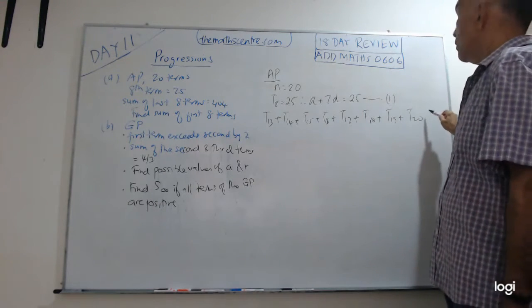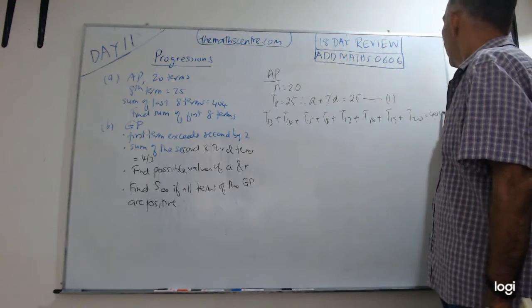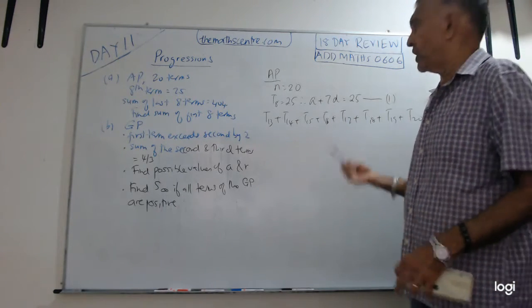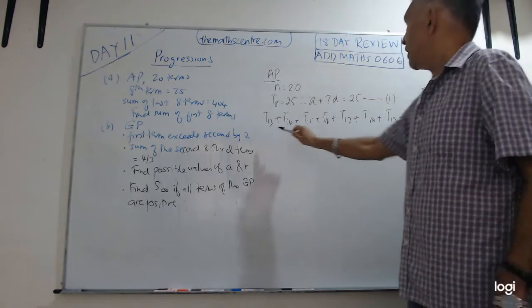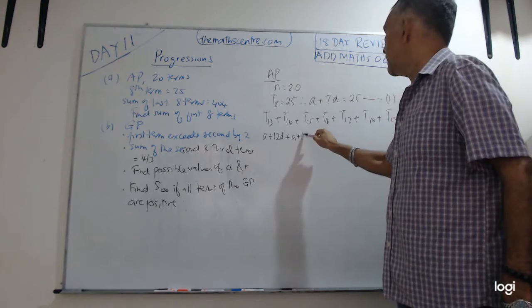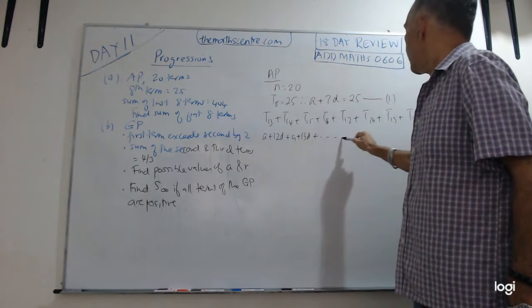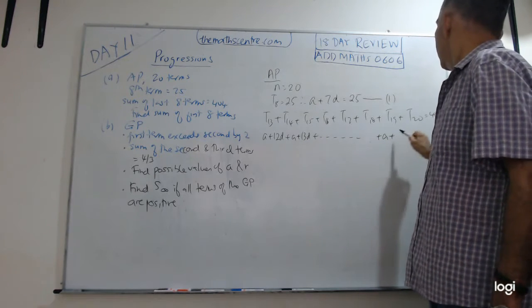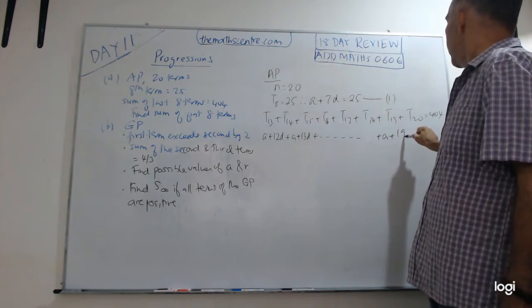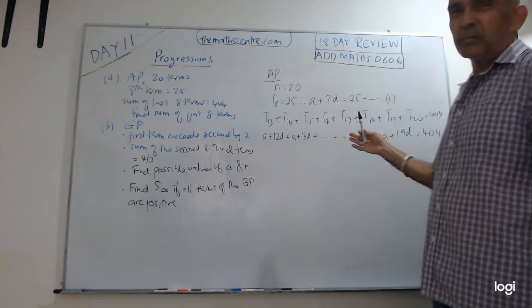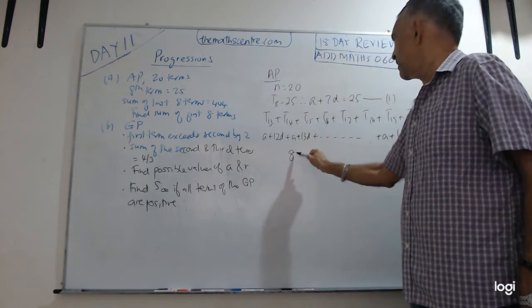The sum of these terms equals 404. So let's write another equation and then you can solve the equation on your own. So I start with a plus 12d plus a plus 13d and all the way up to a plus 19d. And that equals 404. So there are eight terms here. So there will be eight A's.